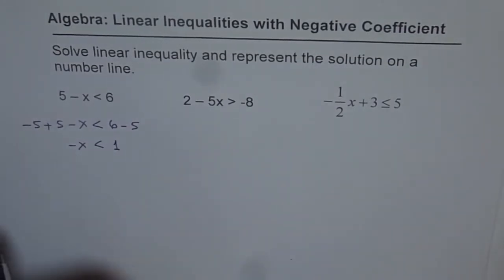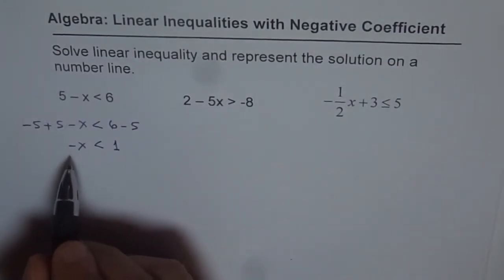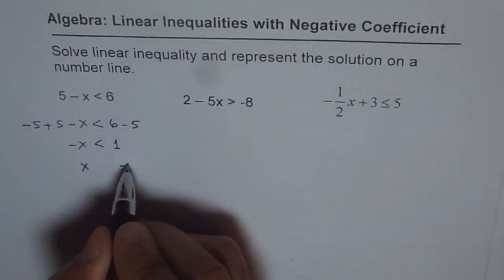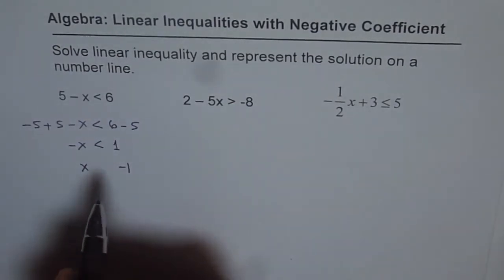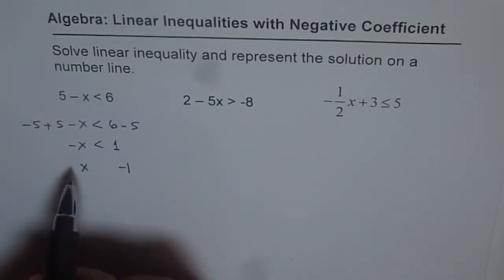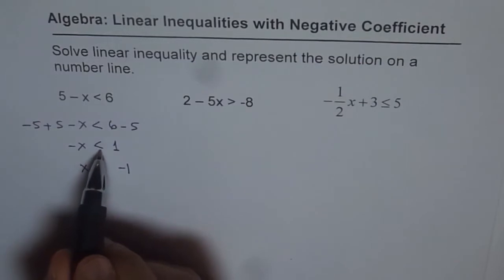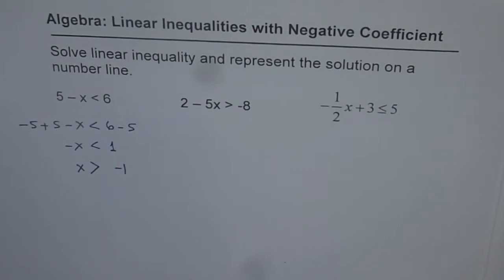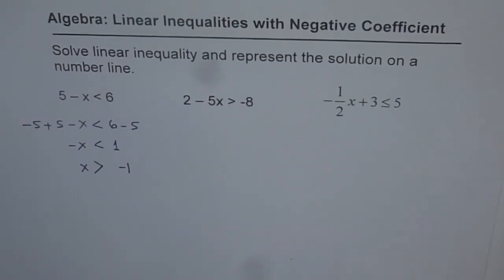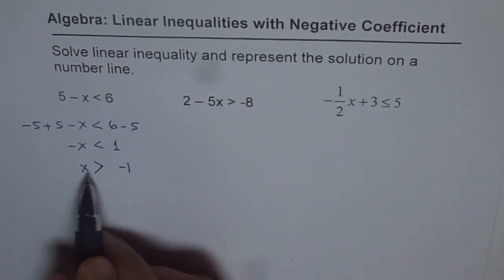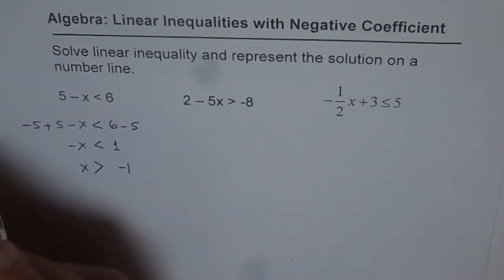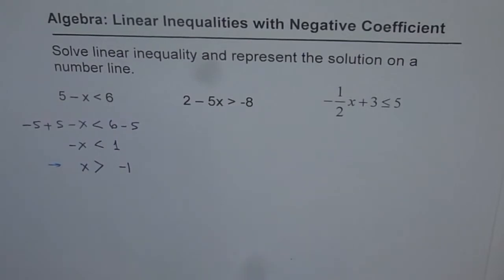Now we have to get rid of this minus. So we can divide or we can multiply by minus 1 on both sides. If we do that, this becomes plus x and that becomes minus 1. Remember, whenever you are multiplying or dividing by a negative number, the sign changes. So it becomes x greater than minus 1. So you need to change the sign also when you multiply by a negative number. That is the critical step. This is what is very critical to remember.